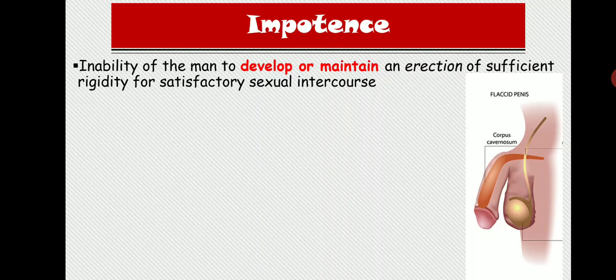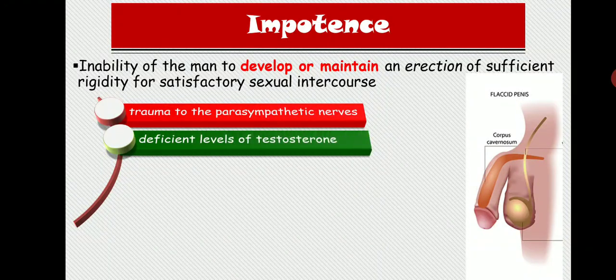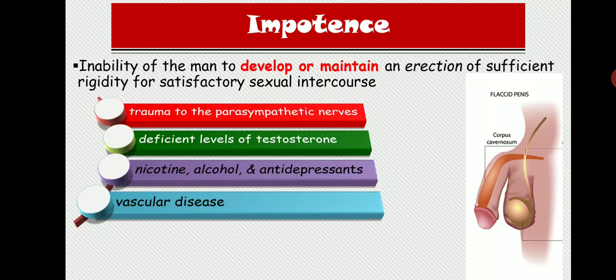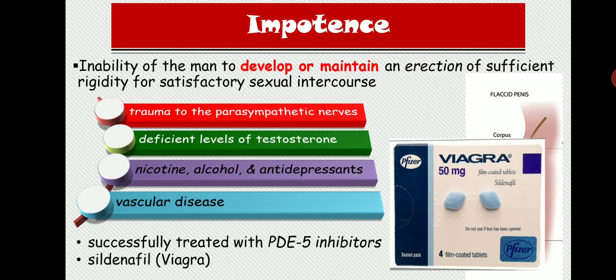Causes of impotence include trauma to the parasympathetic nerve supply required for erection, testosterone deficiency, and drugs such as nicotine, alcohol, and antidepressants. Vascular disease is also a cause. Impotence is successfully treated with phosphodiesterase-5 (PDE5) inhibitors such as sildenafil (Viagra).